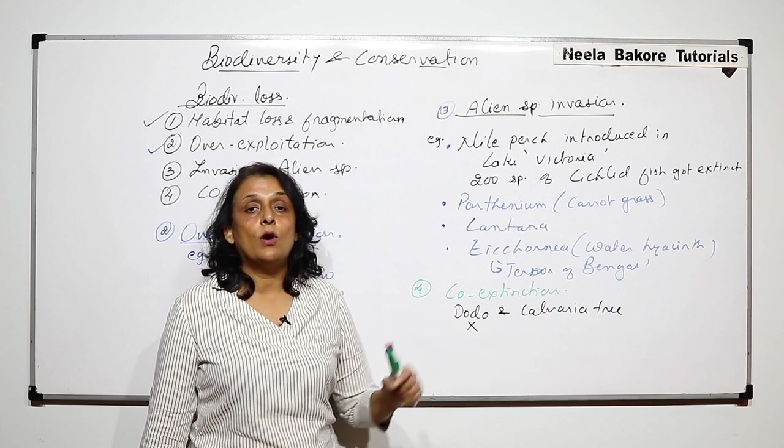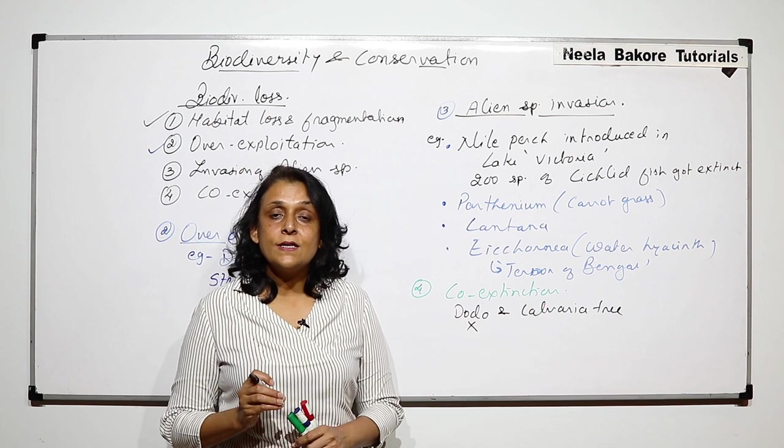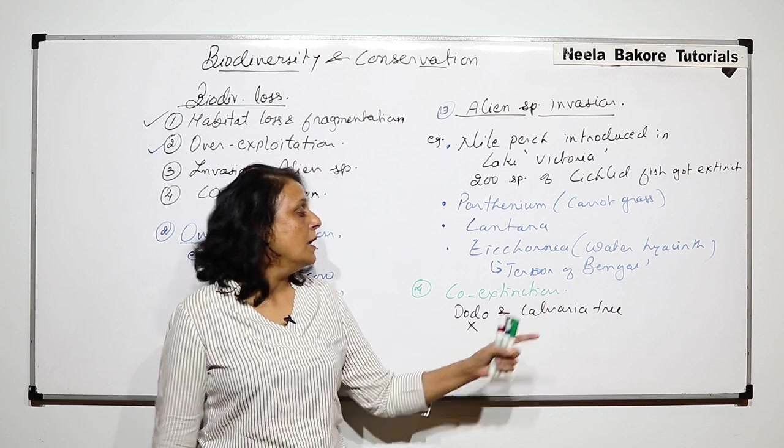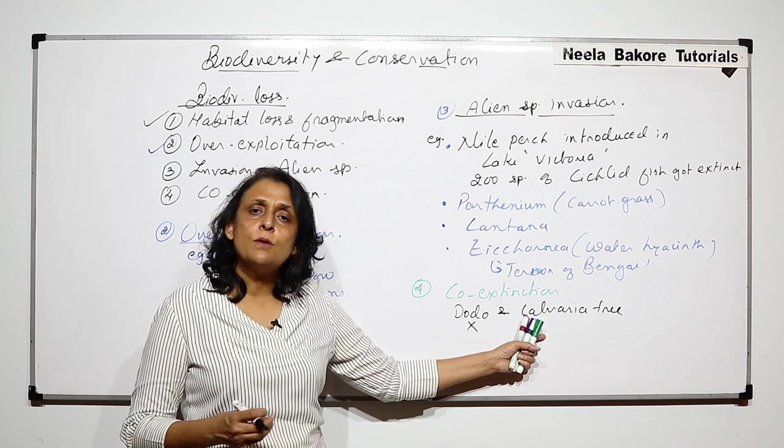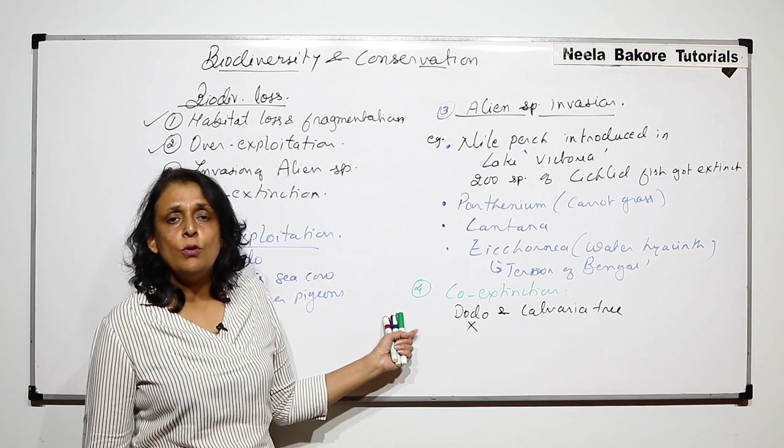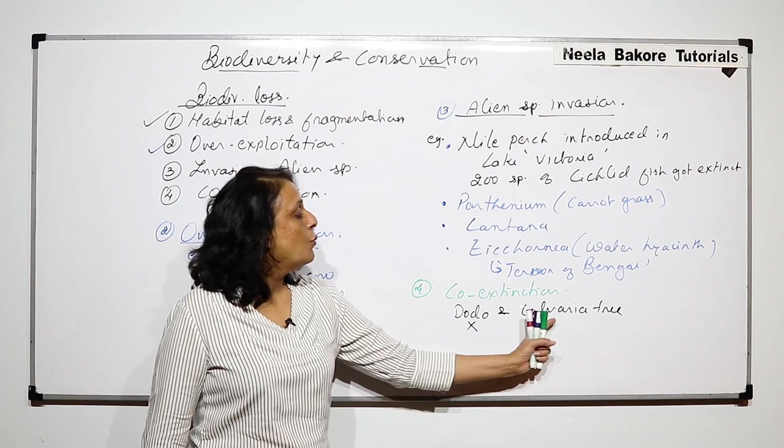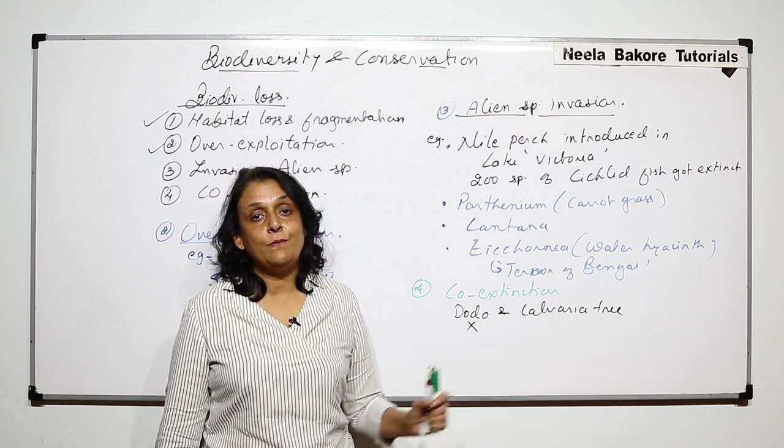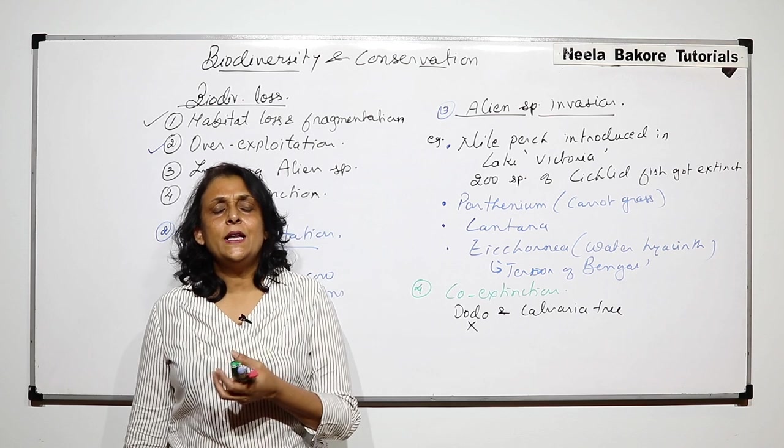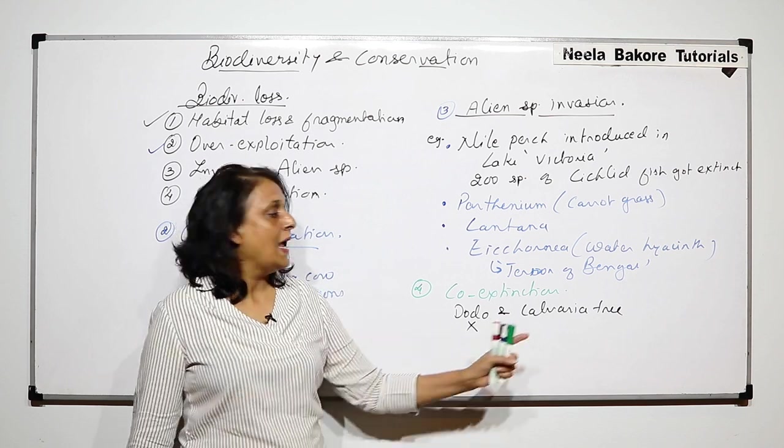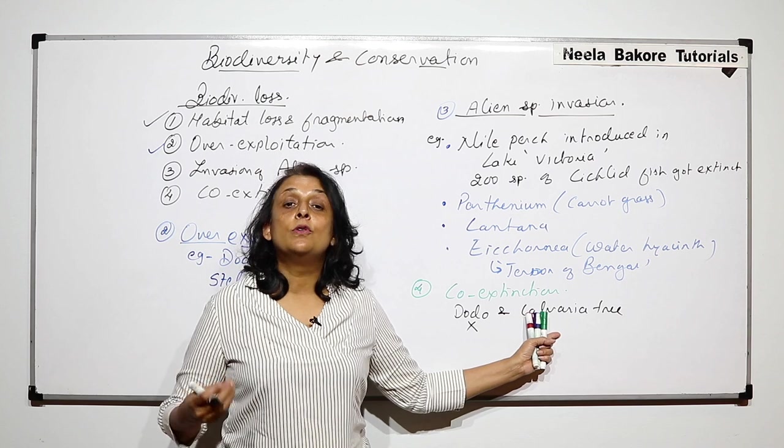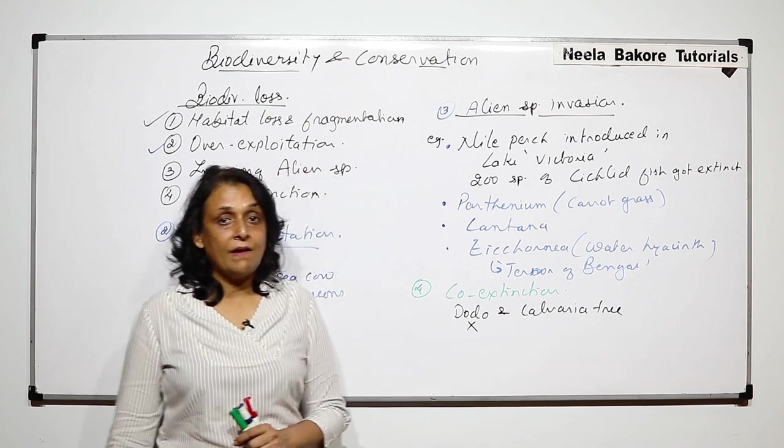They introduced some other birds very similar to Dodo. One such bird was turkey, and they fed this turkey with the seeds of Calvaria tree. Some 10-20% seeds germinated, and that is how they are able to revive this Calvaria tree.